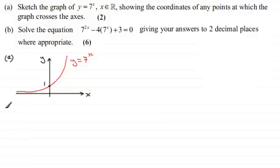Okay welcome back then if you had a go. So first of all then I'll just copy out the question. That is 7 to the power 2x minus 4 multiplied by 7 to the power x plus the 3 equals 0.